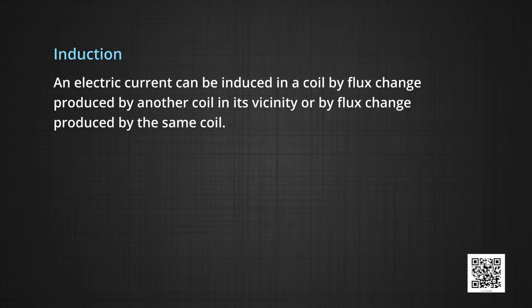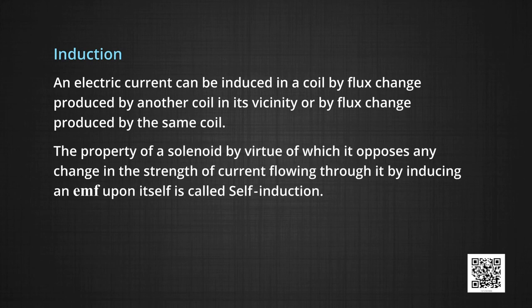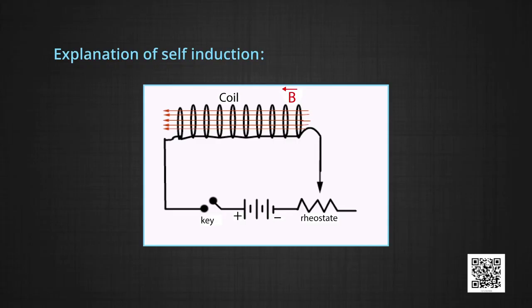An electric current can be induced in a coil by flux change produced by another coil in its vicinity, or by the flux change produced by the same coil. The property of a solenoid by virtue of which it opposes any change in the strength of the current flowing through it by inducing an EMF upon itself is called self-induction. As soon as the key in the circuit is pressed, the current through the coil increases. This changes the flux linked with the coil and the coil induces an EMF upon itself so as to oppose this change in flux. This EMF will be induced in such a direction that it will try to decrease the current flowing through it.